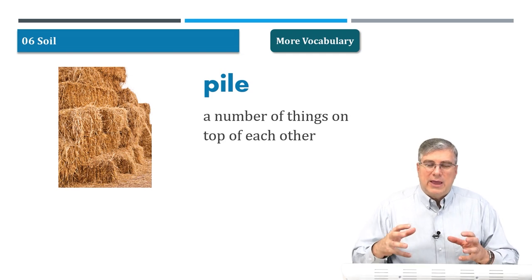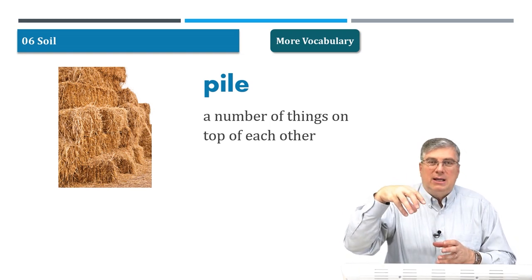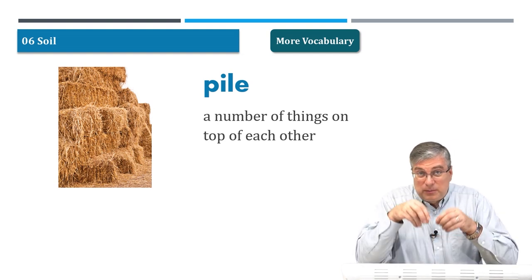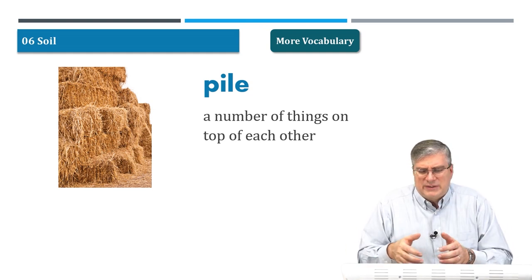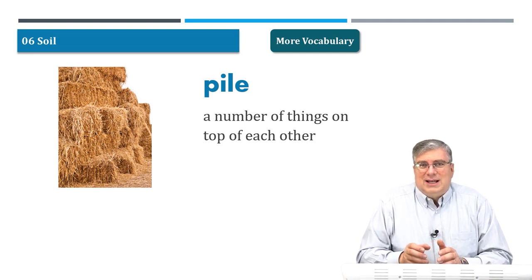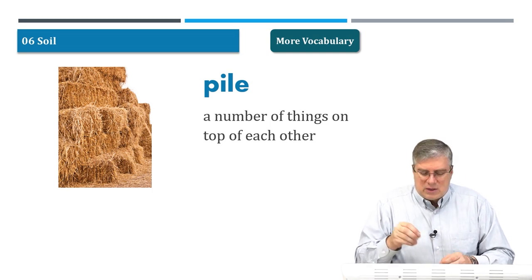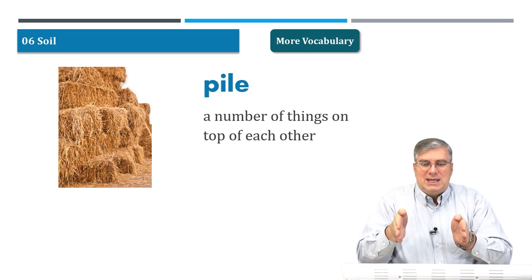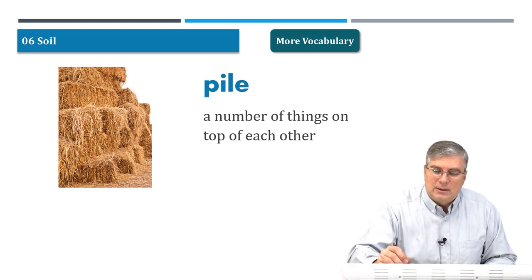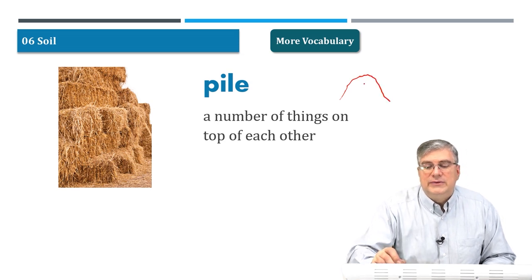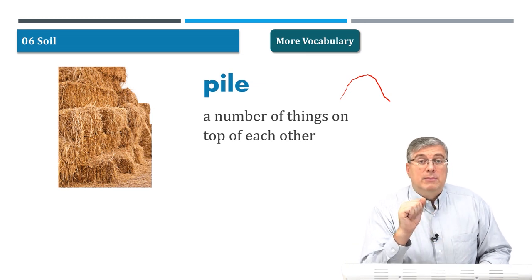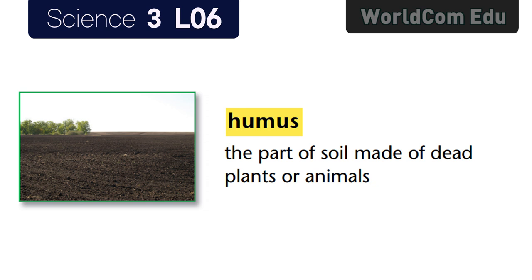Next word: pile. When you collect and gather things together, you probably make a pile. A pile can be very neat and straight if the things are square or easy to stack. If they're round — like marbles — they roll around and it's hard to stack them. Usually a pile looks like this: a pile of leaves, a pile of sand, a pile of grains. A pile is a number of things on top of each other. That's our vocabulary for today — Lesson Six: Soil.